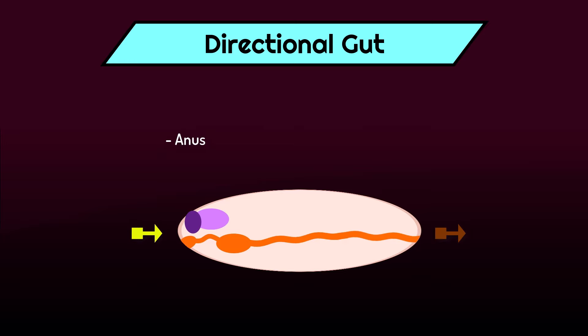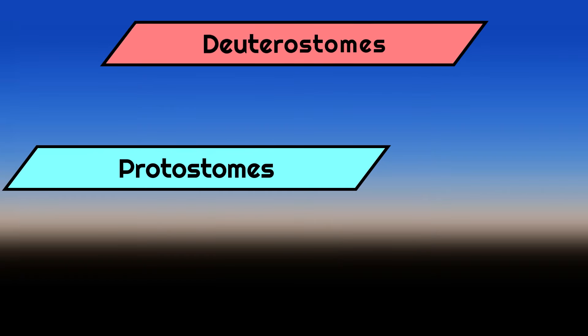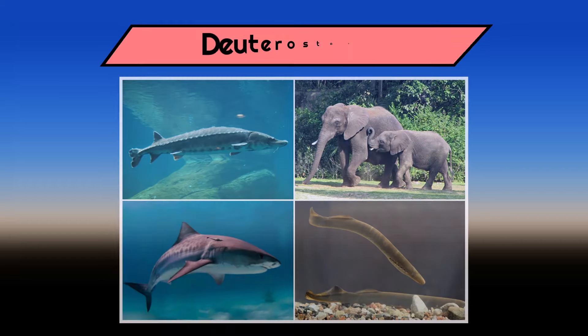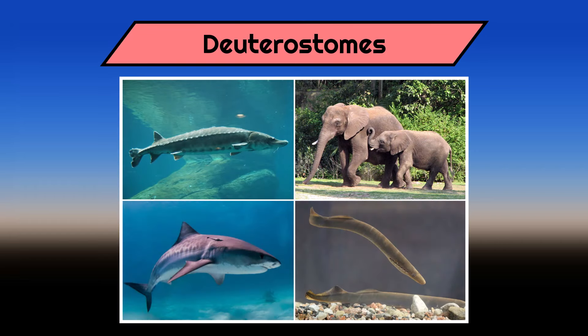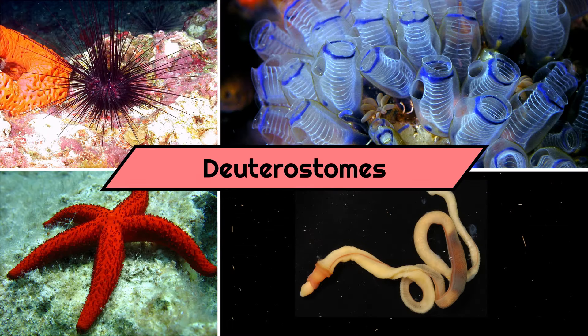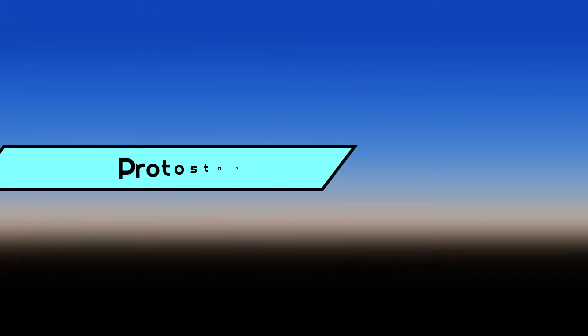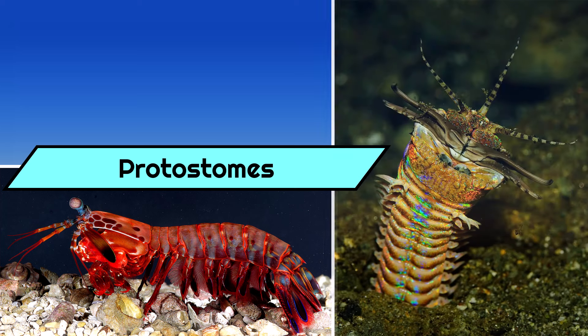But here something very peculiar seems to have been going on. There is a great divide in the animal kingdom that revolves around a fundamental disagreement on what is up and what is down, and where things go in and where they go out again. These two factions are known as the protostomes and the deuterostomes respectively. The deuterostomes are represented by vertebrates like ourselves and certain invertebrate groups like echinoderms, acorn worms, sea squirts and others. The protostomes comprise all the rest, most notably the arthropods, annelids and the mollusks.